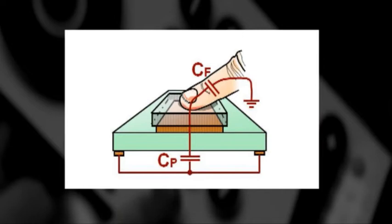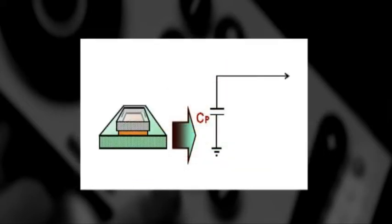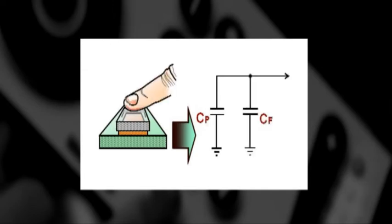What happens with CapTouch is we build a small sensor on the board. And when you touch it, you actually form a capacitor between that plate and ground — whether the ground's from you holding it or ground on the floor. What happens when you do that, you actually cause an increase in the capacitance, and the microcontroller senses that, and that's what triggers the touch.